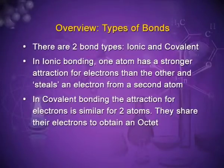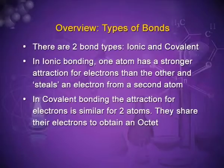Let us have an overview of the two types of bonds. In ionic bonding, one atom has a stronger attraction for electrons than the other and it steals an electron from the second atom. In covalent bonding, the attraction for electrons is similar for both atoms, and they share their electrons to obtain an octet. Kossel and Lewis studied the nature of noble gases and concluded that noble gases do not undergo chemical combination because of their complete octet, and that only the valence electrons play a role in the formation of chemical bonds.